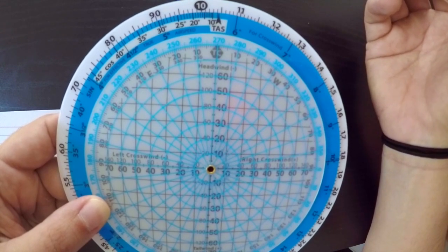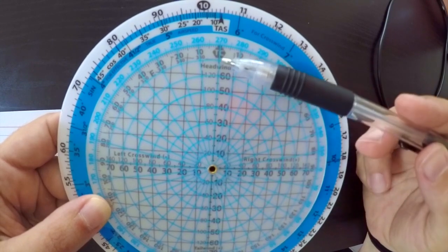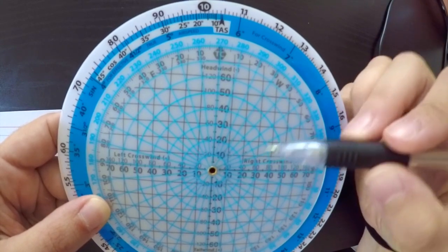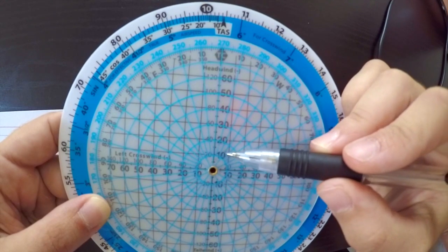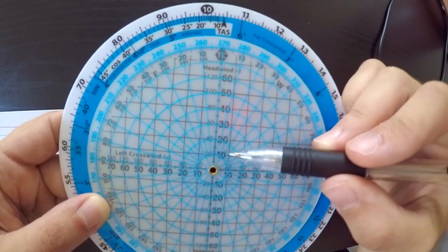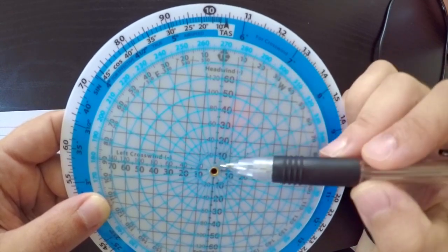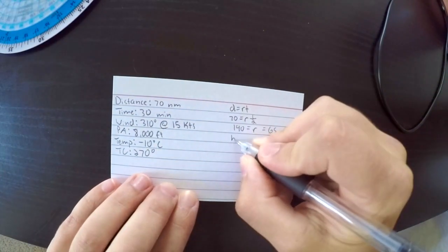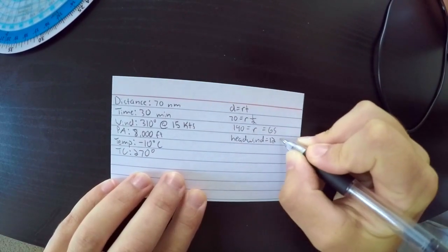Now, since we're concerned about converting from ground speed to true airspeed, we're going to worry about this vertical axis right here. It says headwind up top, tailwind on the bottom. So we have our little dot right here, which is 310 at 15 knots. We track over, and we can see that it's about 12 or 13 on this axis right here, and it is on the top, so it's a headwind.